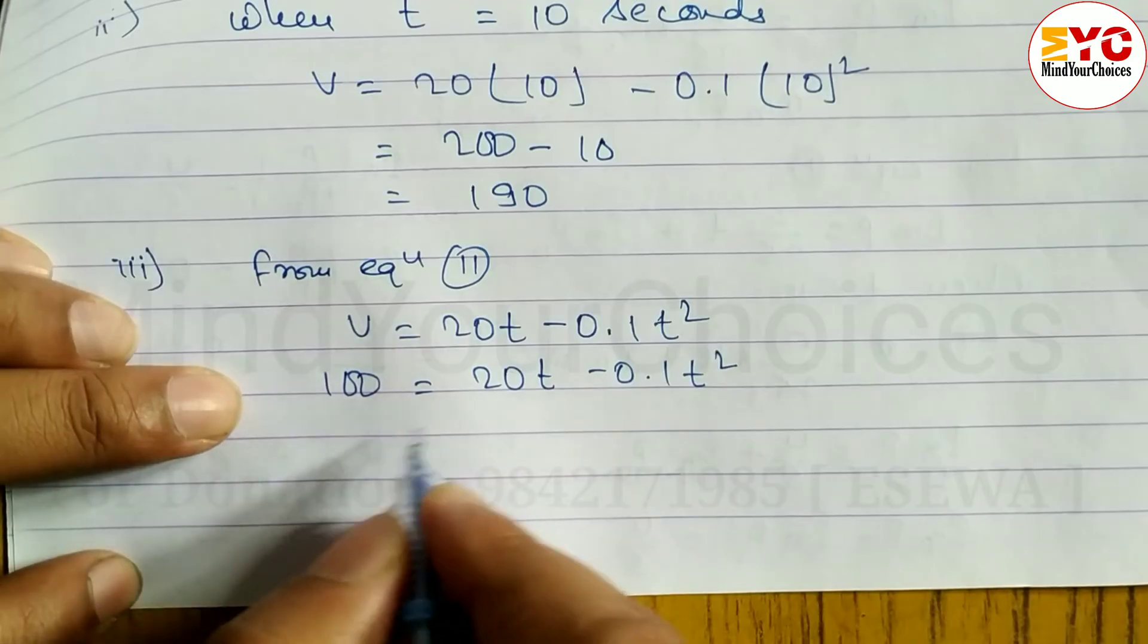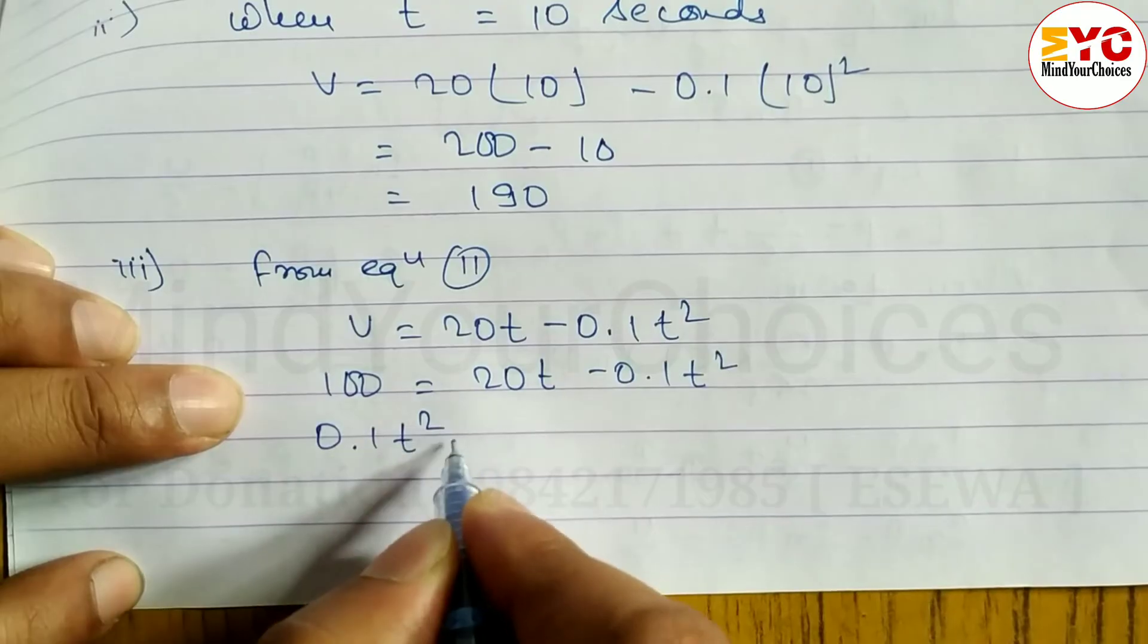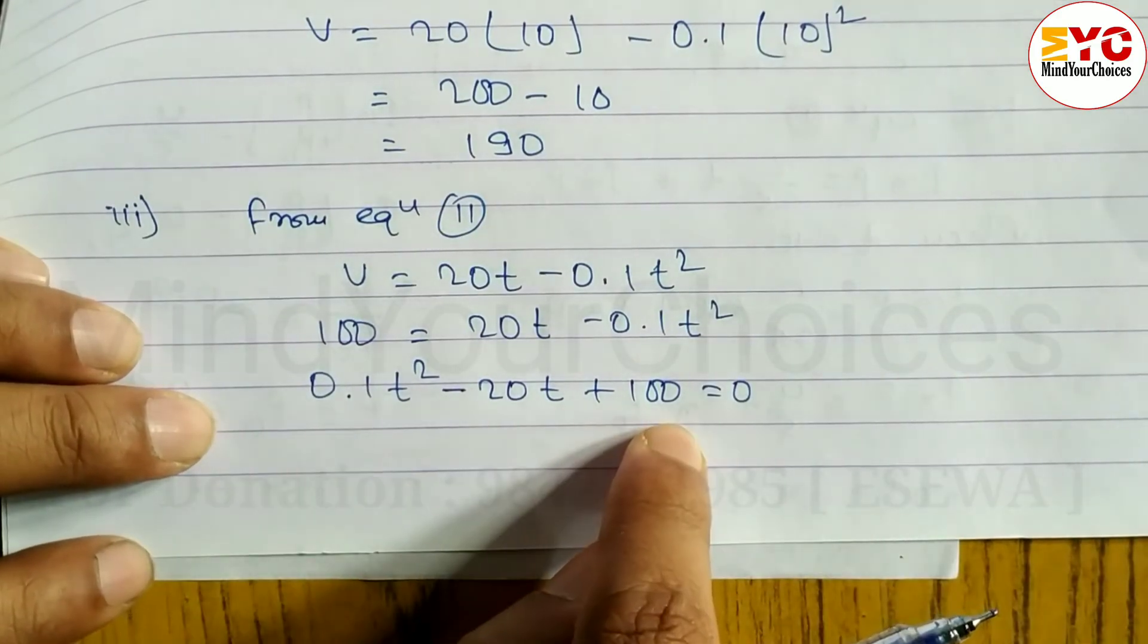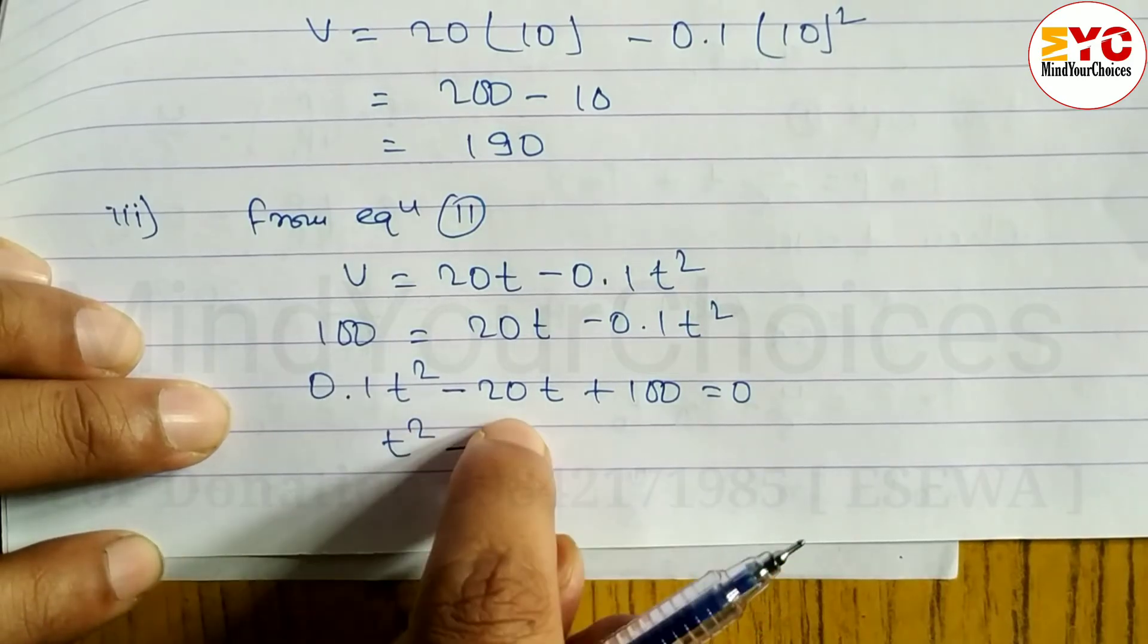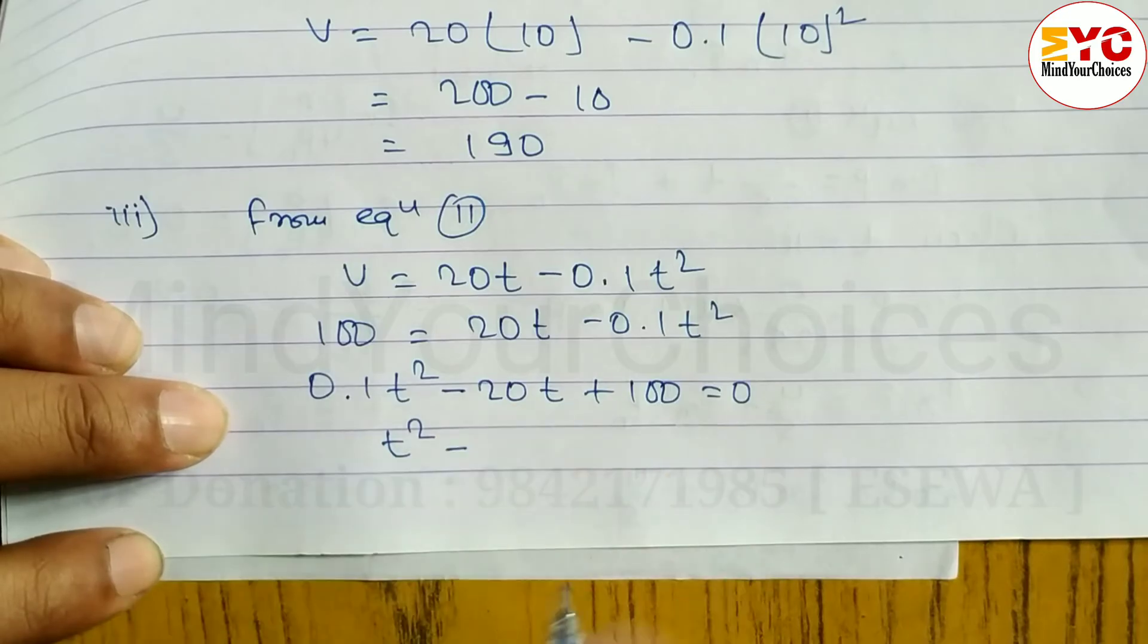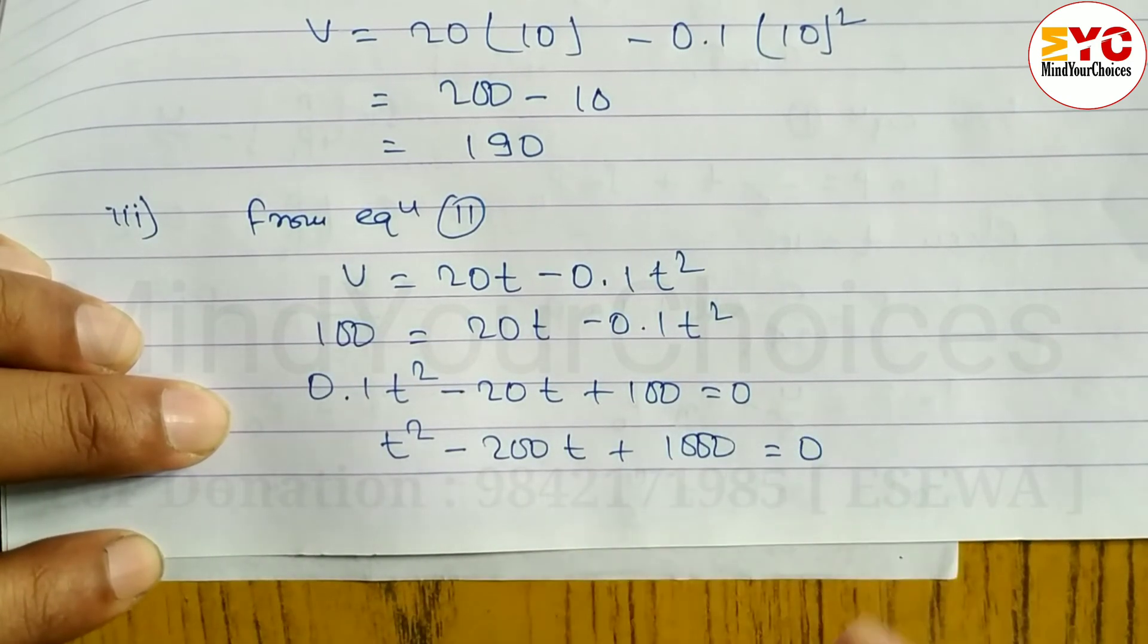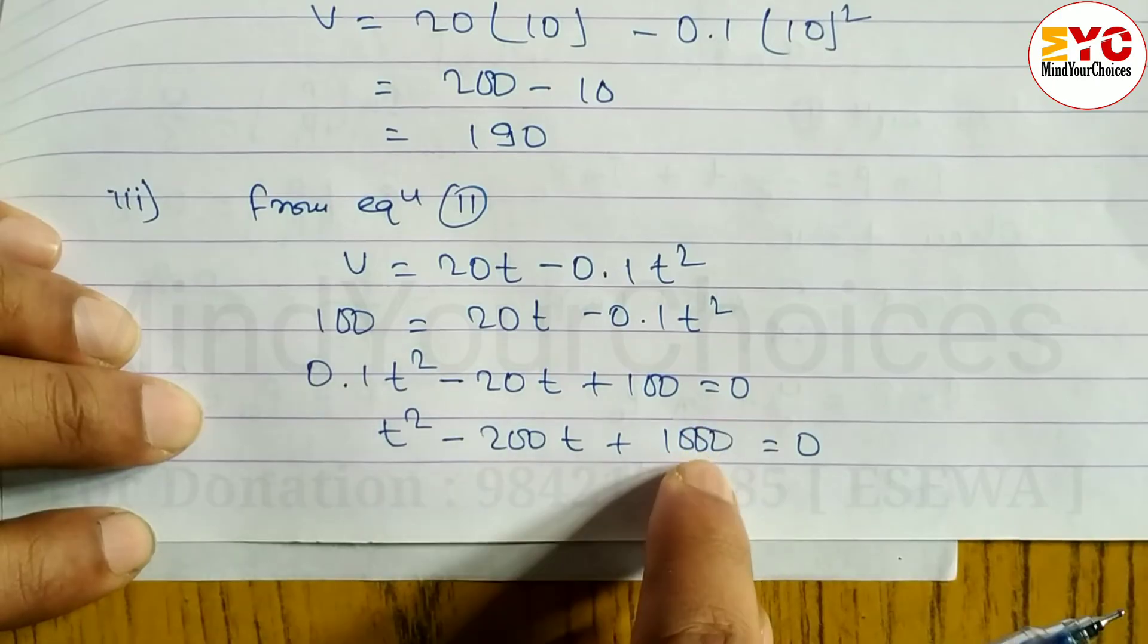So we can write 100 equals 20T minus 0.1T squared. After that, let's arrange the terms on the left side: 0.1T squared minus 20T plus 100 equals 0. After that, divide all three terms by 0.1. We can get T squared minus 200T plus 1000 equals 0.